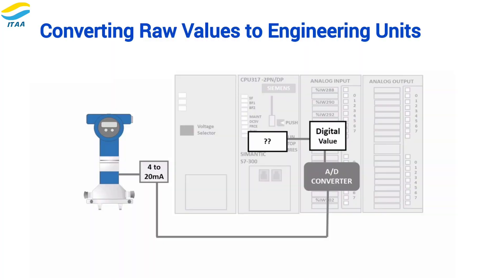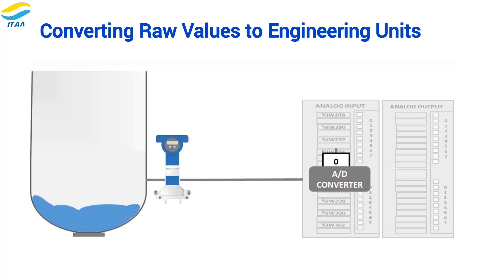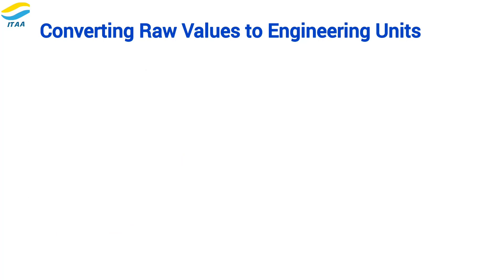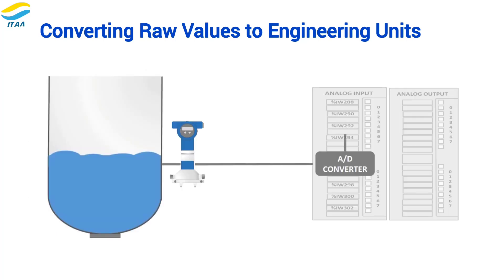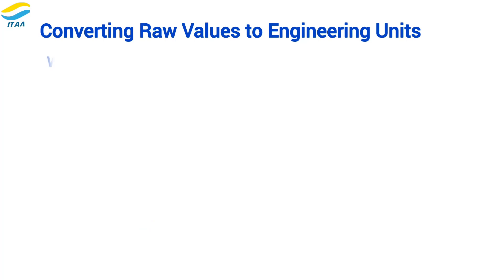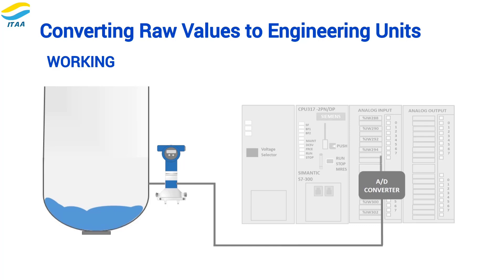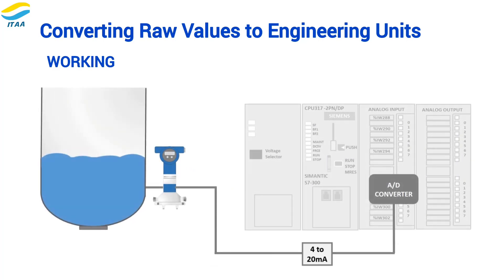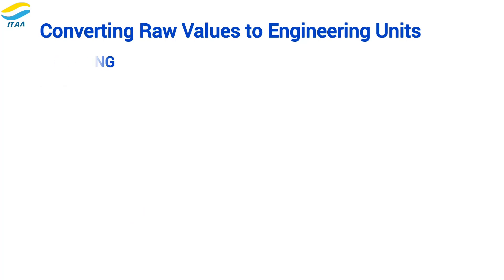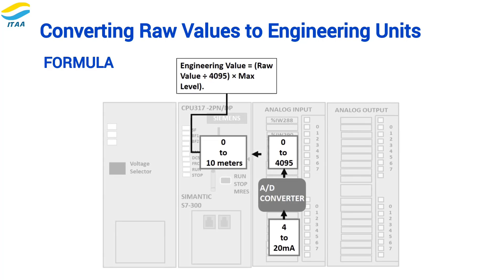The raw count itself doesn't directly tell us the tank level in meters — it's just a number. To make it meaningful, the PLC scales this raw count into an engineering value, like meters, that we can actually use in our control logic. If the raw count is 0, the PLC interprets the level as 0 meters. If the raw count is 4095, the PLC knows the tank is at its maximum level, let's say 10 meters. With a simple formula, the PLC converts any raw value from 0 to 4095 into a level measurement, so we can read the exact tank level in meters rather than just seeing a raw number.